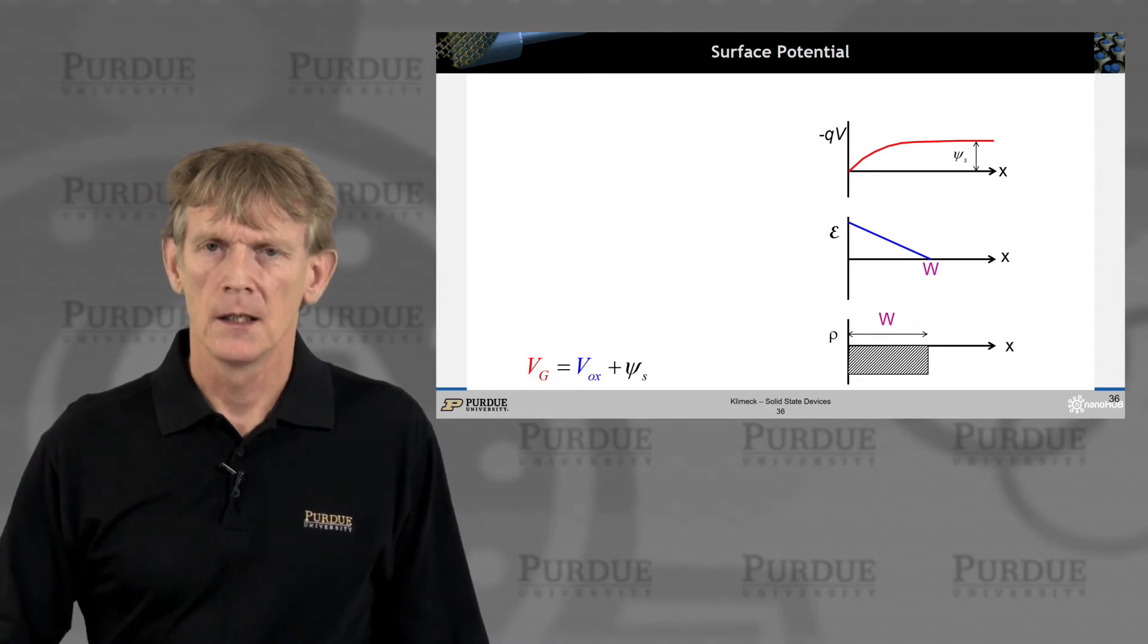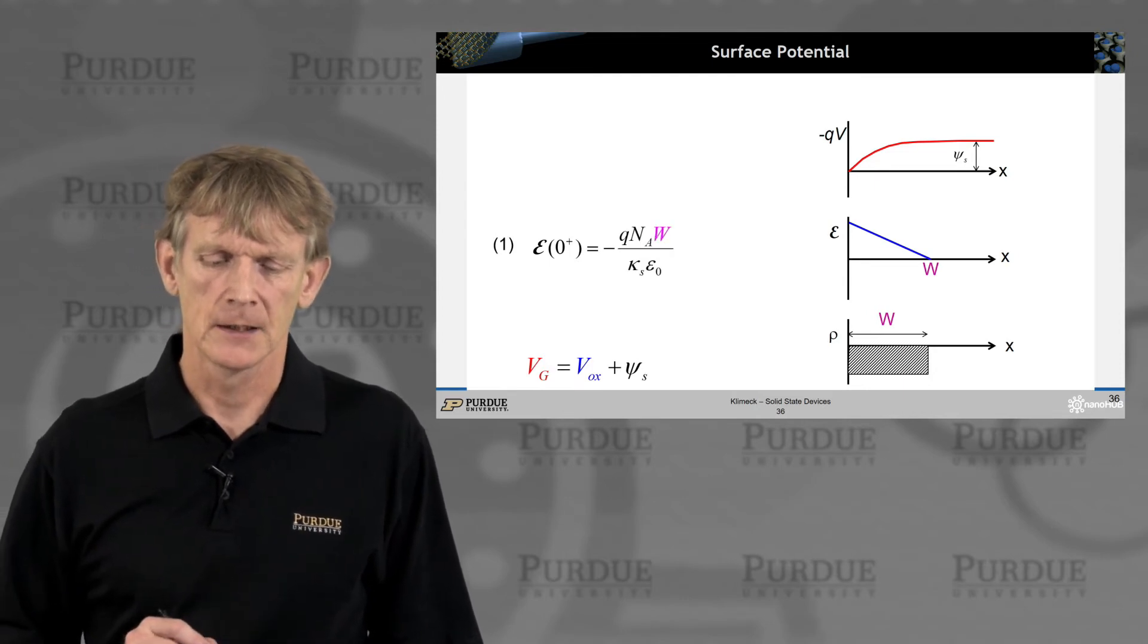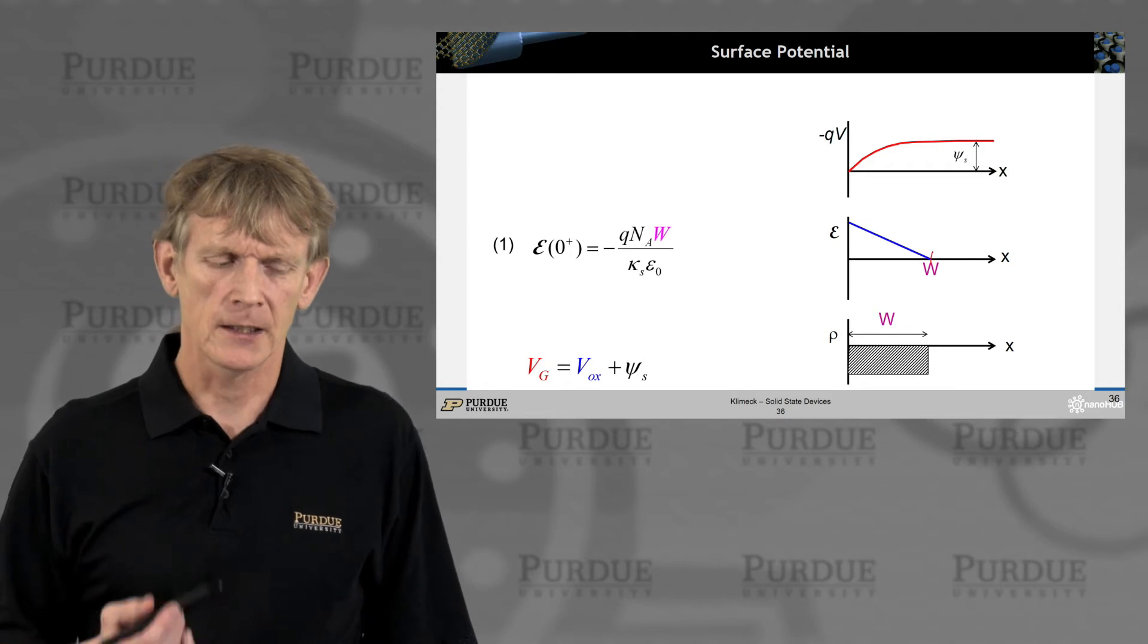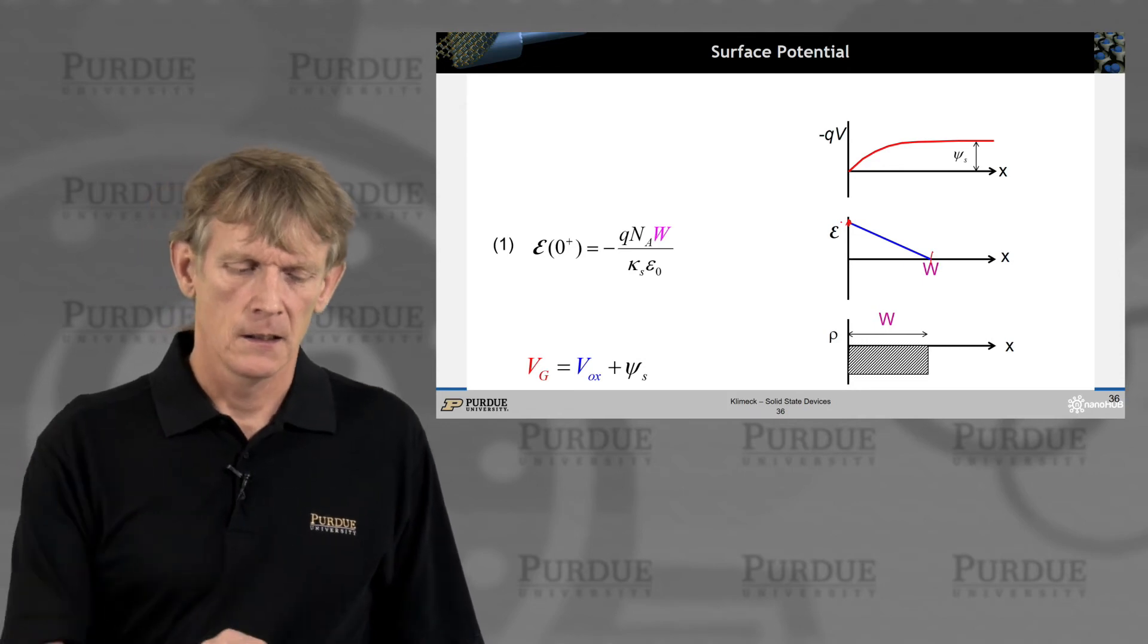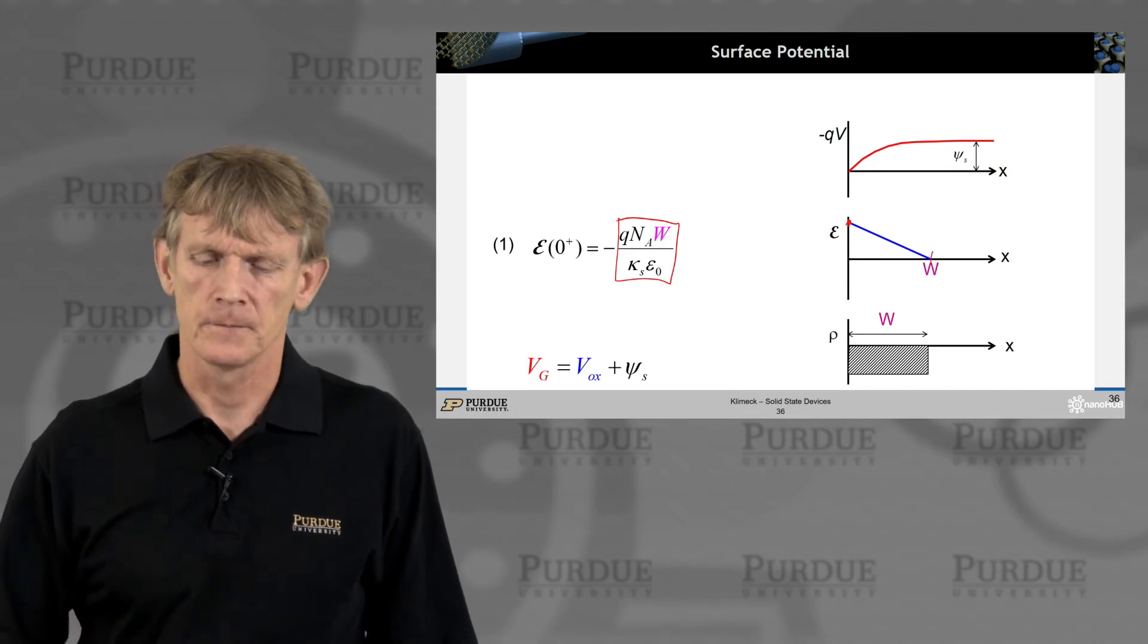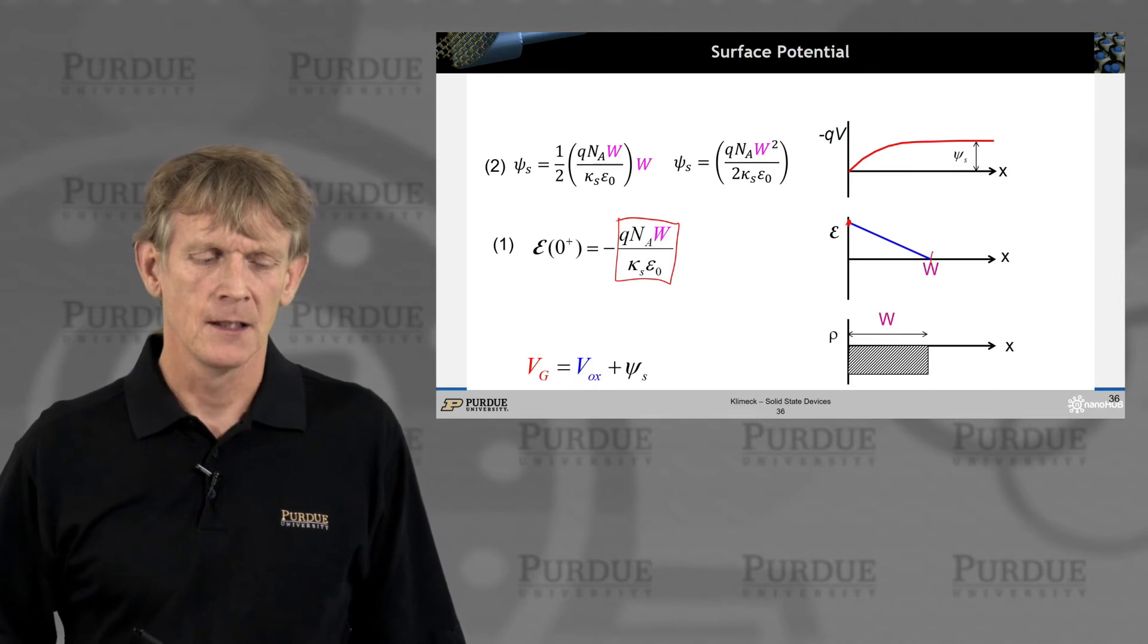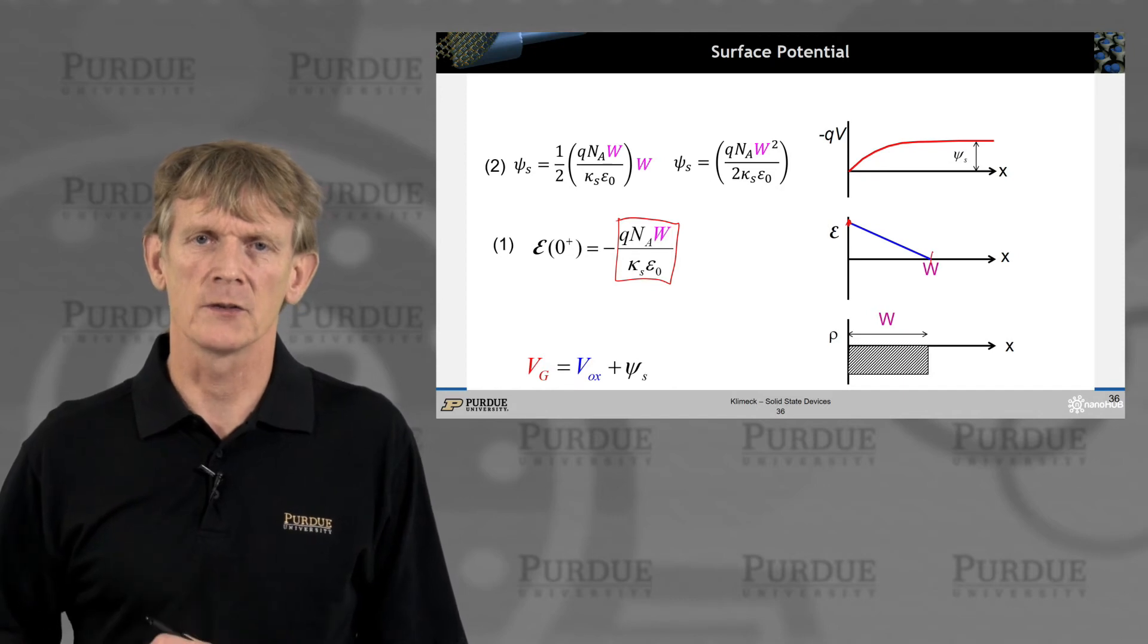Again, we start from the exposed acceptors that are negatively charged, and we have a depletion region. So, we've calculated this electric field again. We're integrating the charge by Poisson equation, so that gets us an electric field at this point. And it's basically the same expression as what we had before for PN junctions. Nothing different. And then we can calculate what we used to call a built-in potential like this, or part of the built-in potential by integrating up the electric field to get this surface potential.